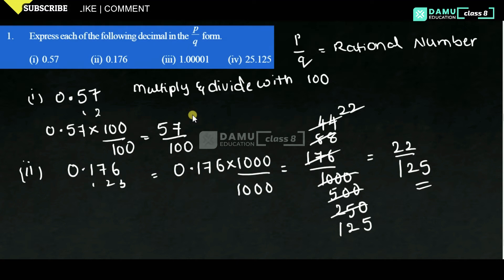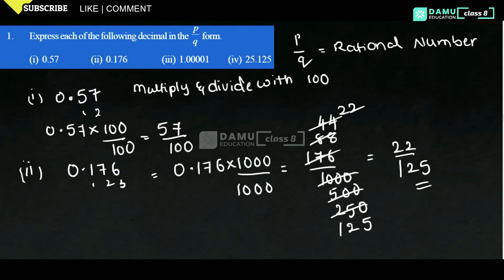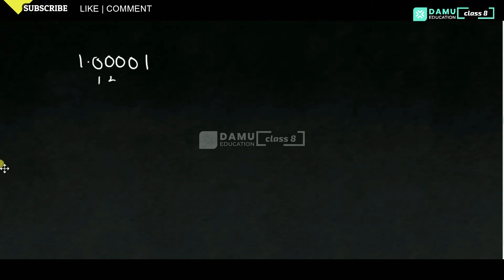Our next one is 1.401. So, 1.401 is our third one. After the decimal, how many places are there? 1, 2, 3, 4, 5 — so, 5 places.